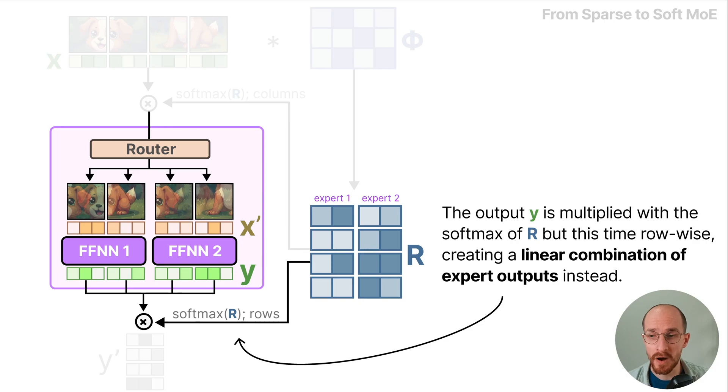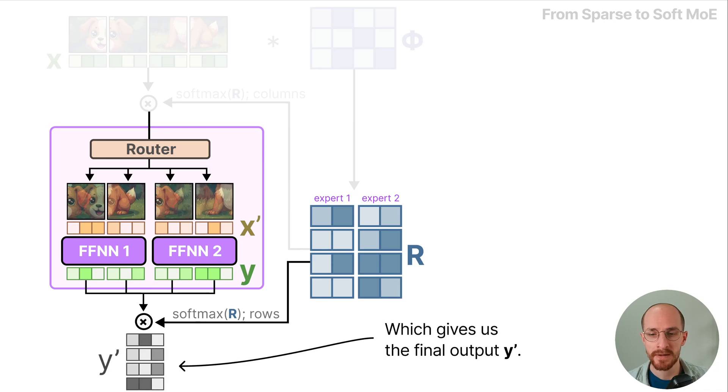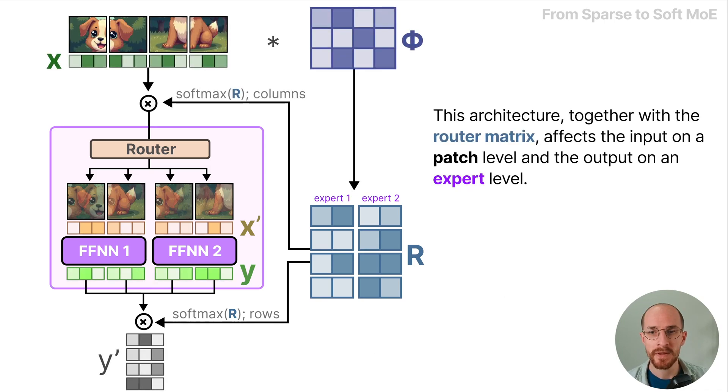Y is multiplied with the softmax of R but this time row-wise, creating a linear combination of expert outputs instead, which gives us the final output.